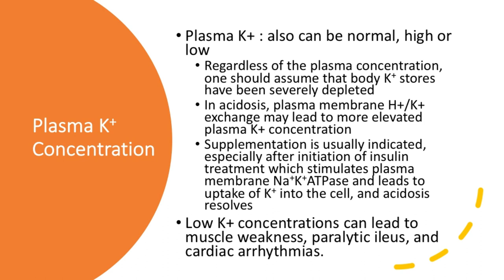Supplementation is usually indicated, but we usually start with a potassium-deplete solution such as 0.9% sodium chloride, or you can use lactated Ringer's because it has low potassium. The sodium itself will stimulate the membrane sodium-potassium ATPase and lead to reuptake of potassium into the cell. When acidosis resolves, you will also see the plasma potassium start to reflect the true body status. When it's low, the problems of hypokalemia include muscle weakness, paralytic ileus, and cardiac arrhythmia.